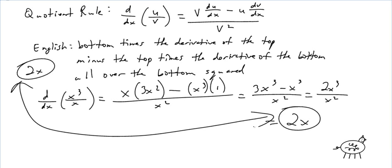Bottom times the derivative of the top, minus the top times the derivative of the bottom. Remember: it's a subtraction sign with division — the quotient rule — and an addition sign with multiplication — the product rule. And it's all over the bottom squared, because there are more people at the bottom in a corporation.